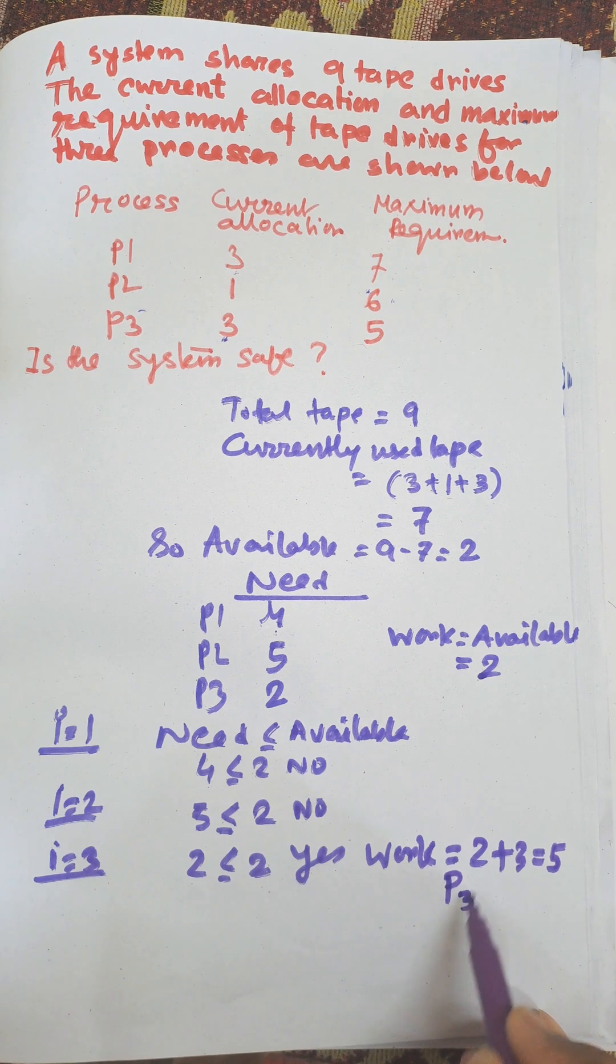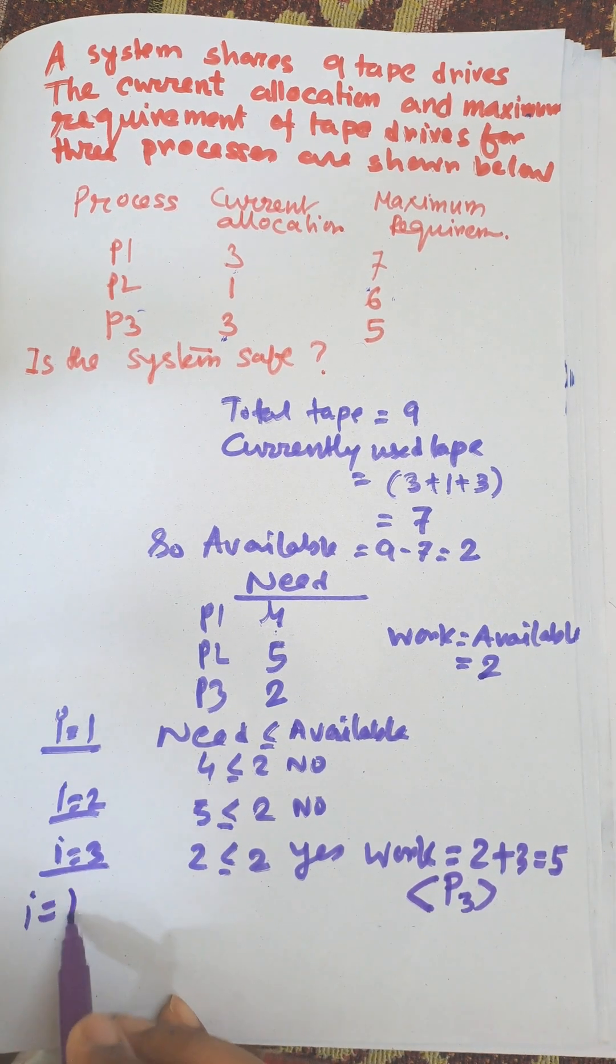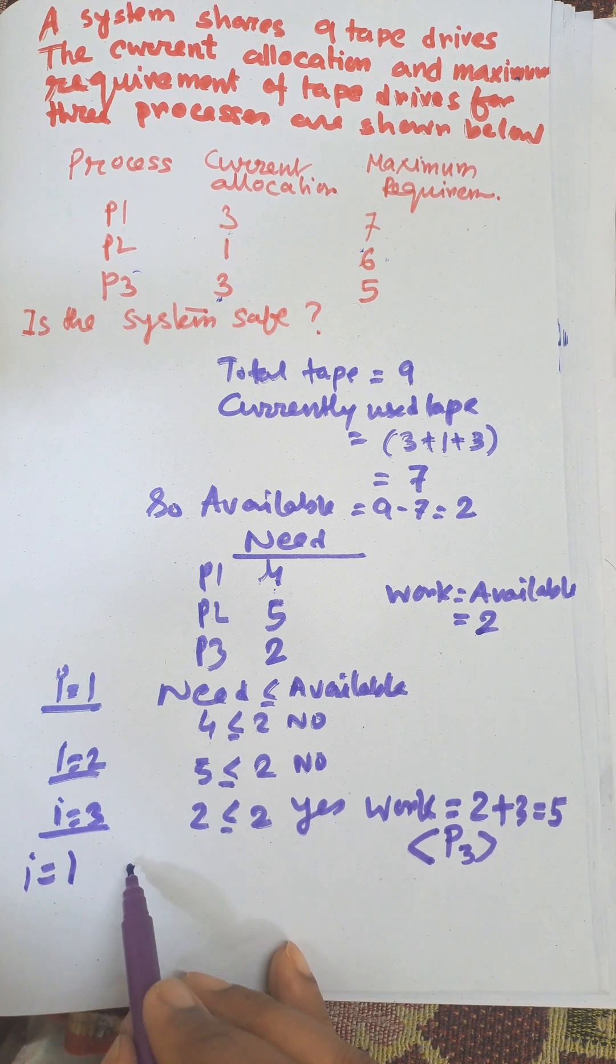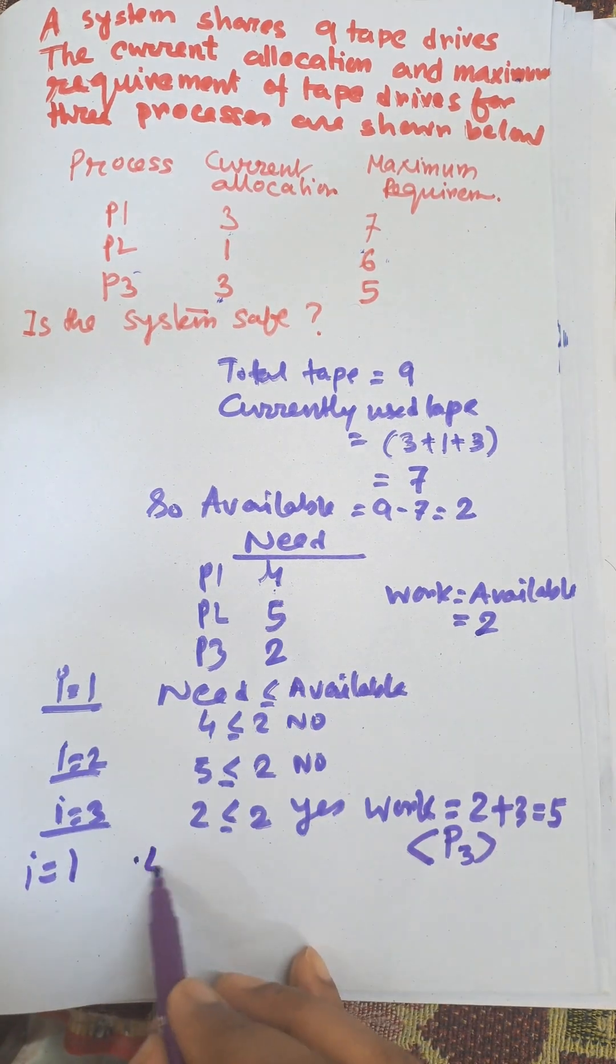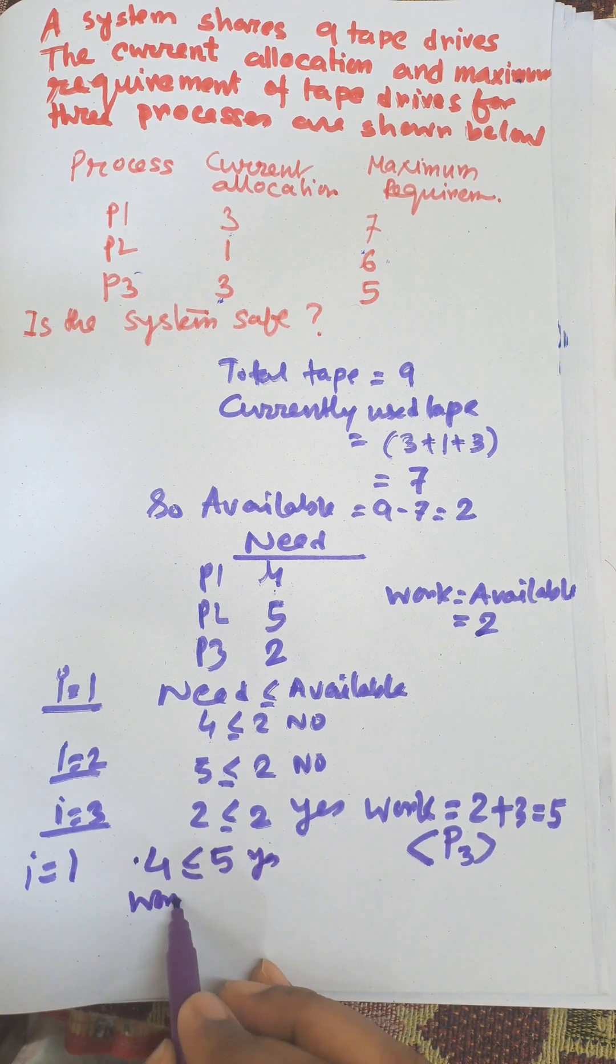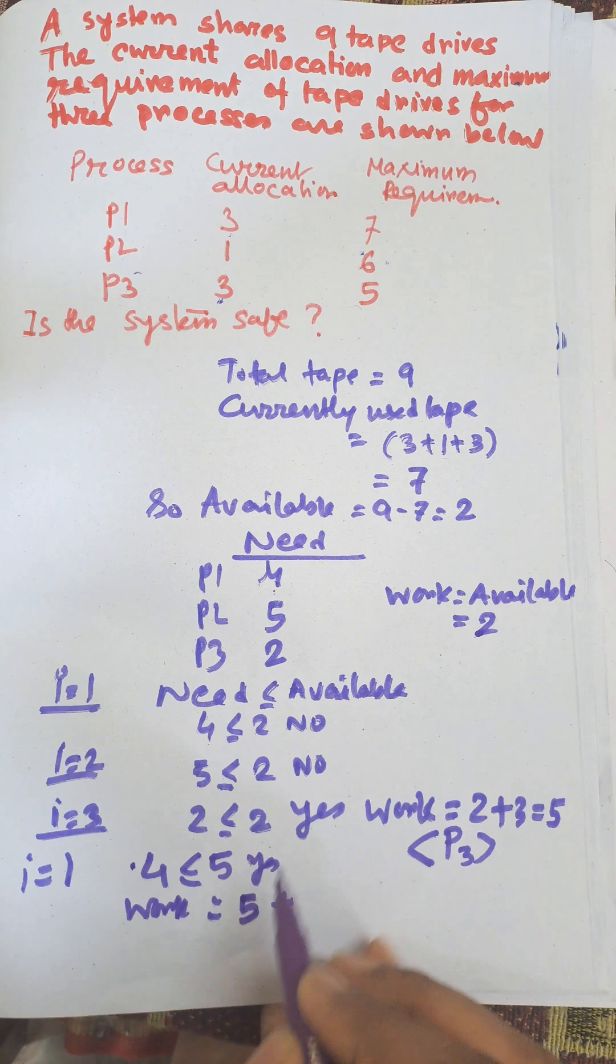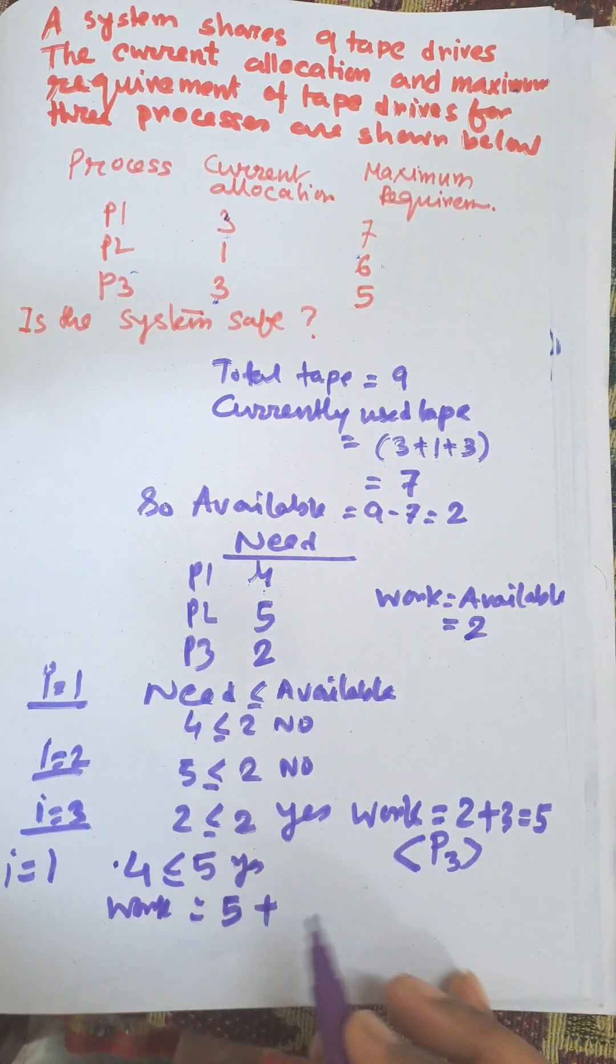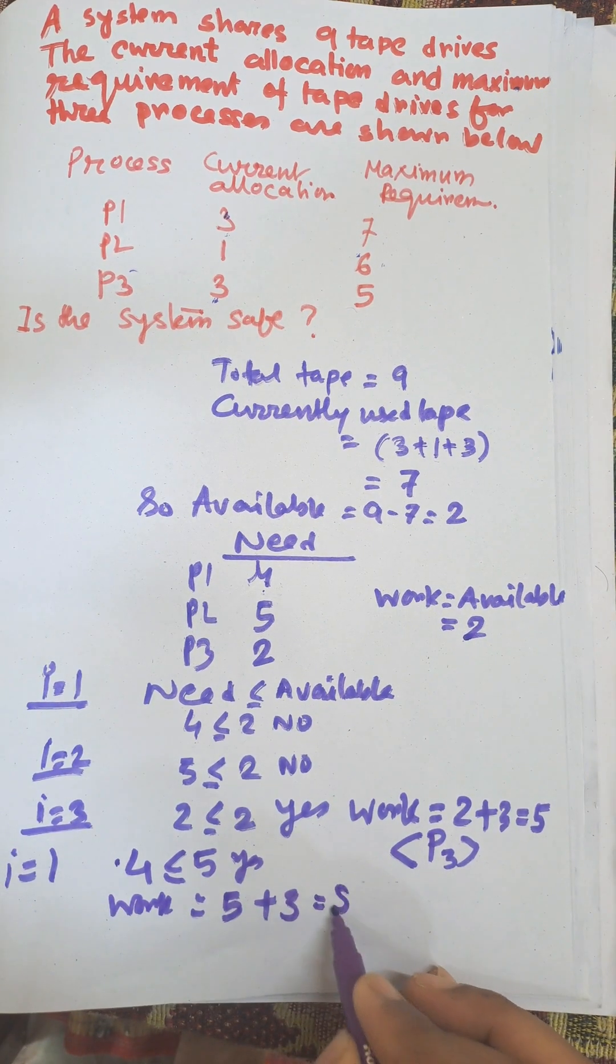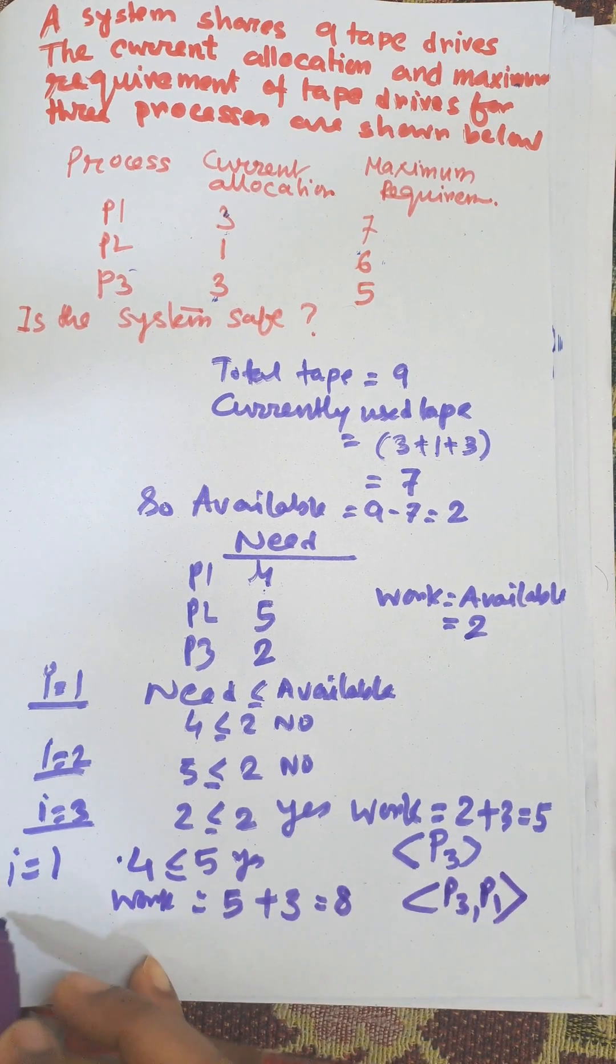Now when i equals one again, we need to check need four and available work is five. Yes, four is less than five. Work equals work plus allocation. Work is five, allocation of P1 is three, that equals eight. Now P3 and next P1 is safe.